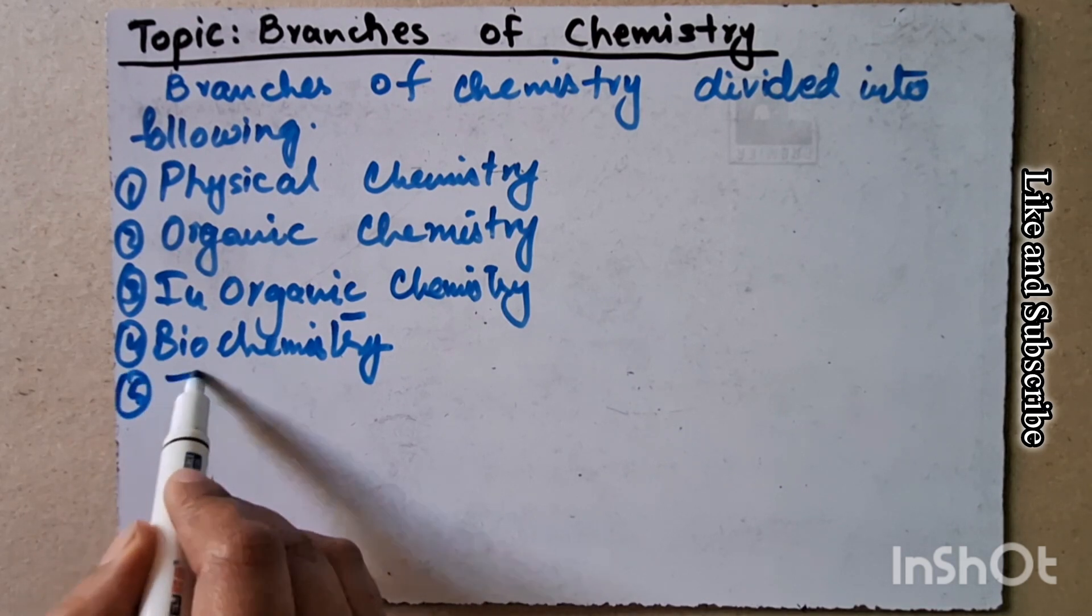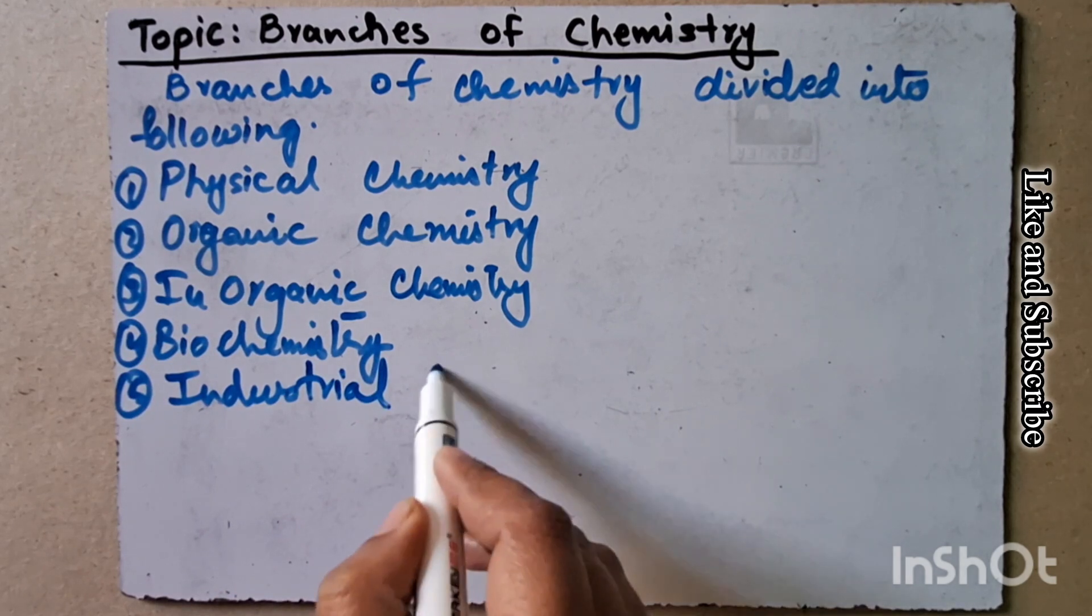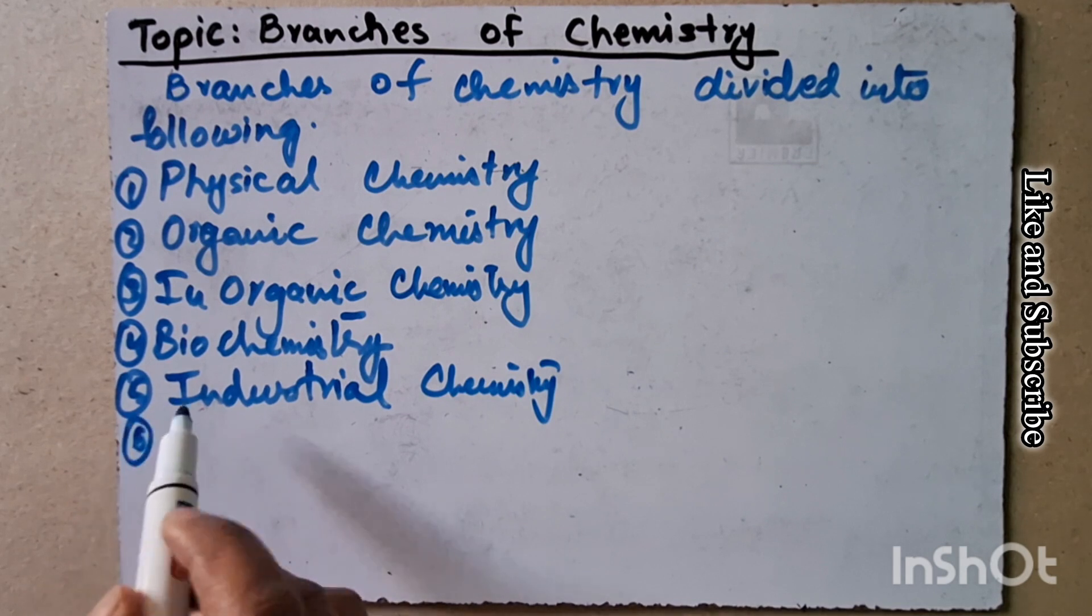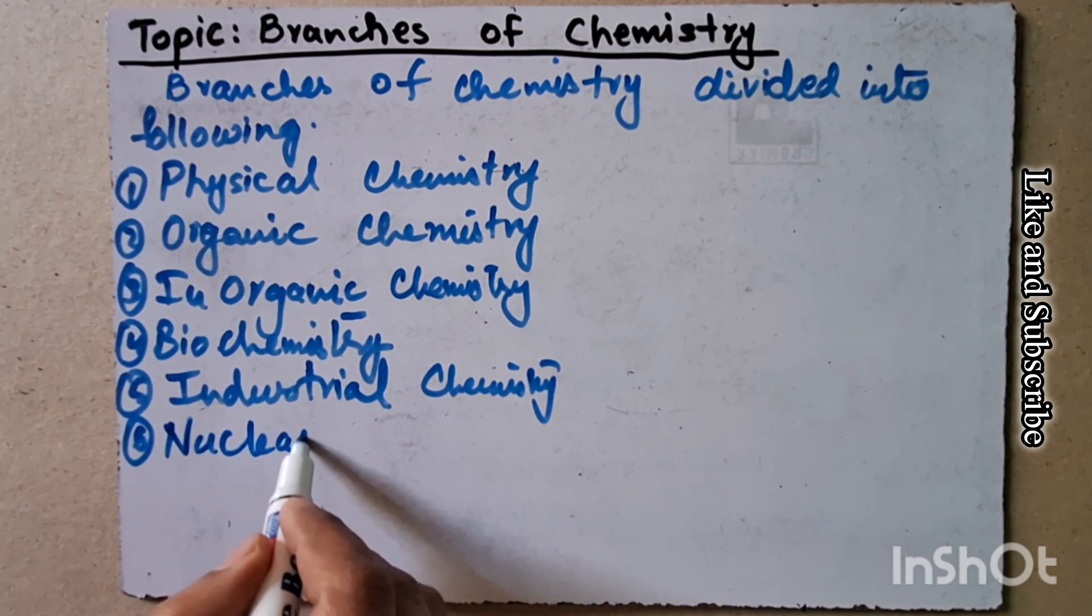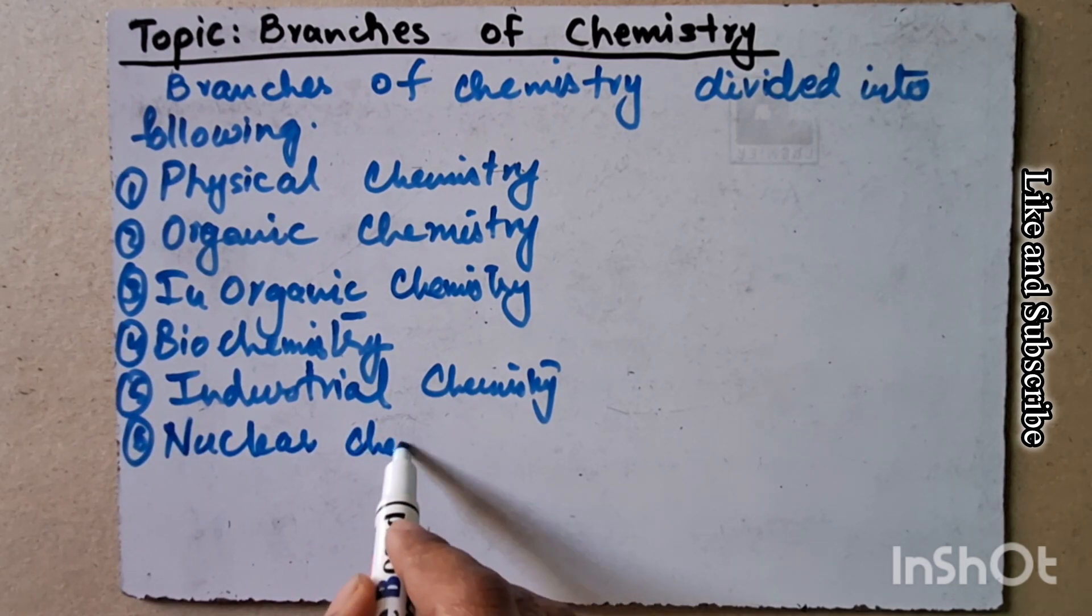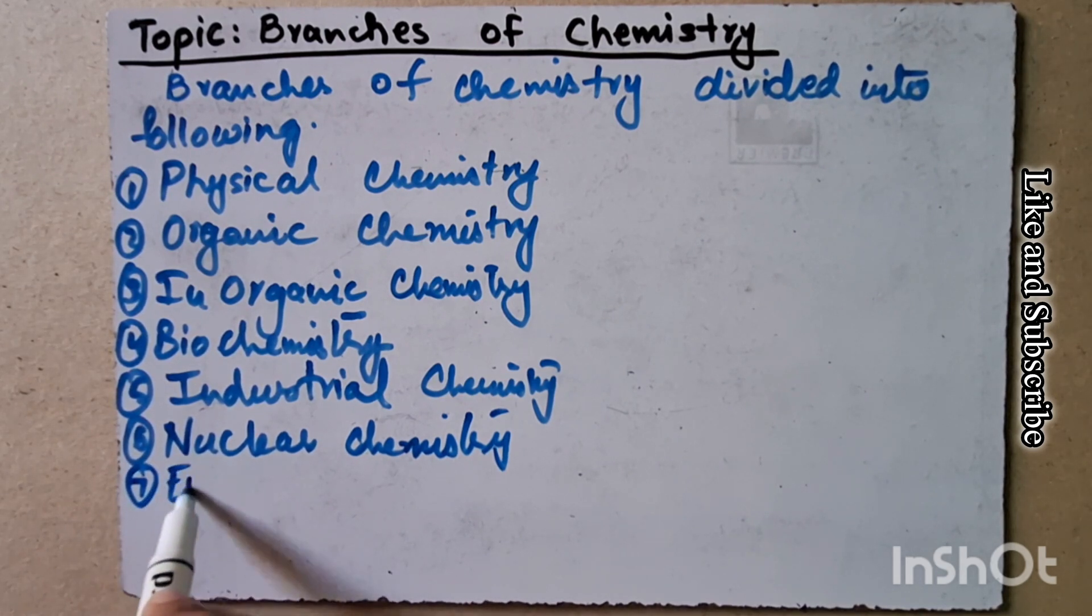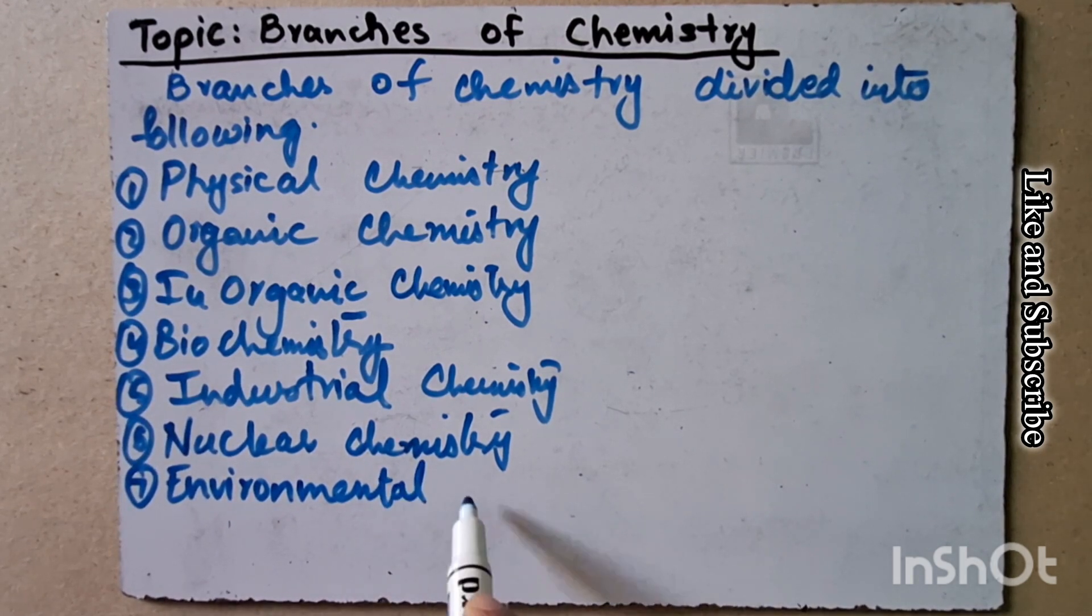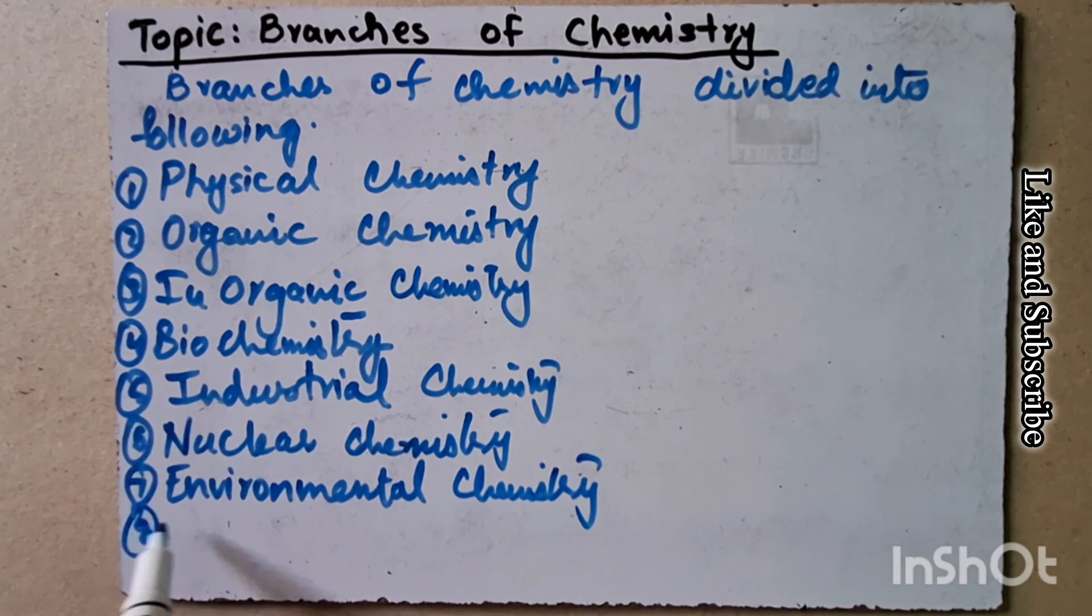Number five, industrial chemistry. Number six, nuclear chemistry. Number seven, environmental chemistry. Number eight, analytical chemistry.